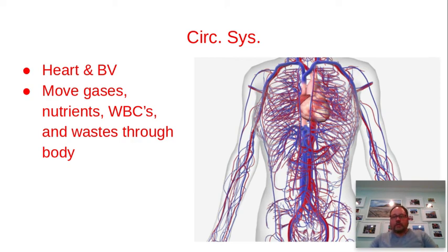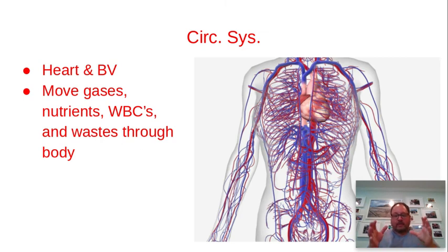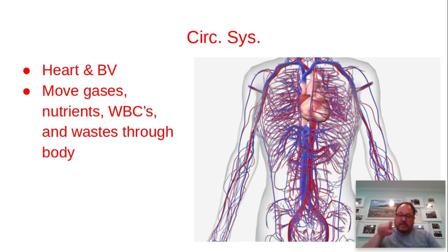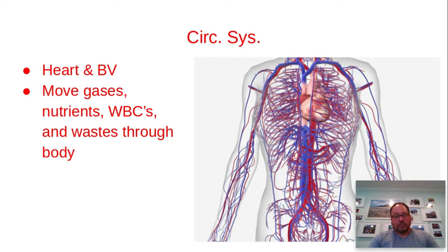Your circulatory system is basically a series of tubes and a pump. Your heart acts like the pump, and you have blood vessels traveling throughout the body — about 60,000 miles of them. You're made of about 10 trillion cells, so to get materials to those cells quickly and take wastes away quickly, you need blood vessels running right up against those cells. Your heart pumps about five liters of blood around your body every single minute, transporting nutrients, waste products, gases, and white blood cells right to those cells.